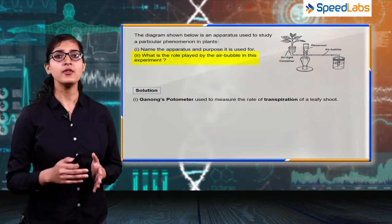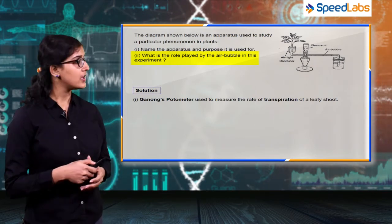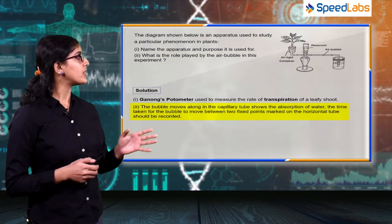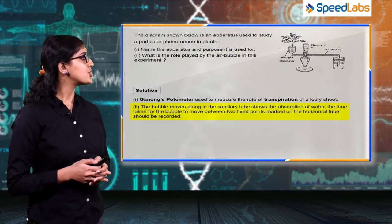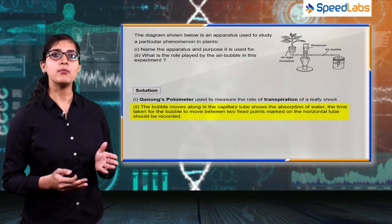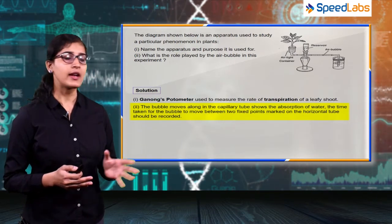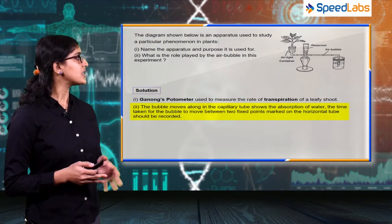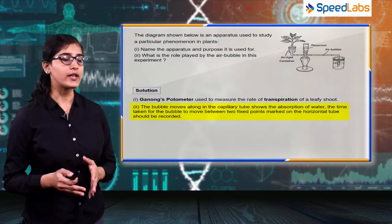The bubble moves along the capillary tube, showing the absorption of water. As the plant absorbs water, the bubble will move towards the right direction, and the time taken for the bubble to move between two fixed points marked on the horizontal tube should be recorded.